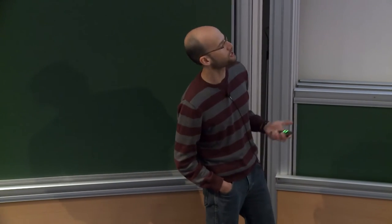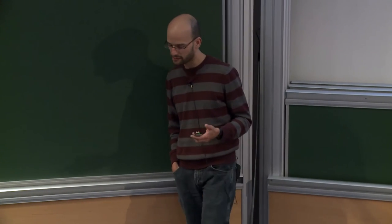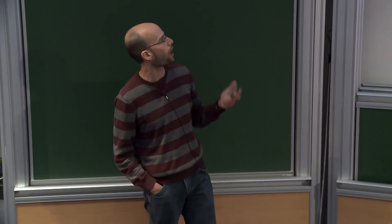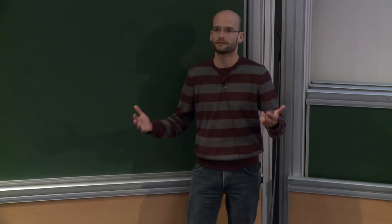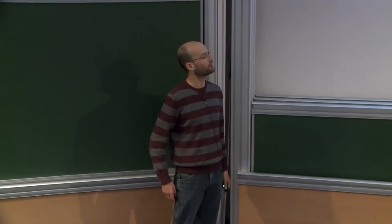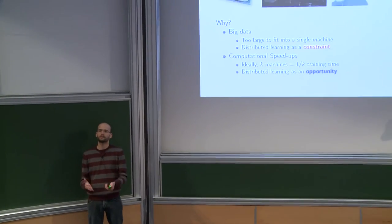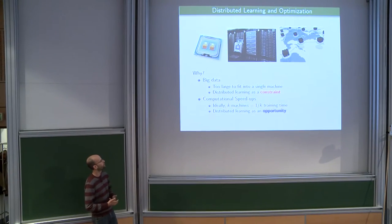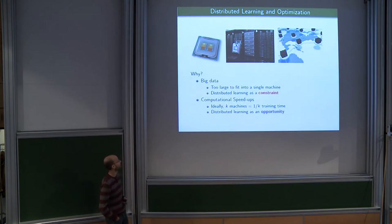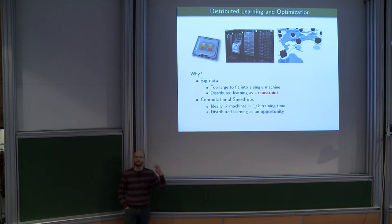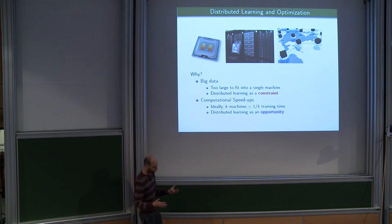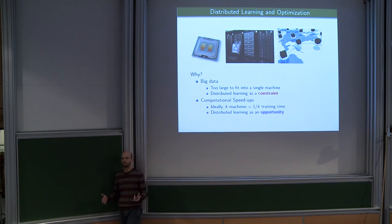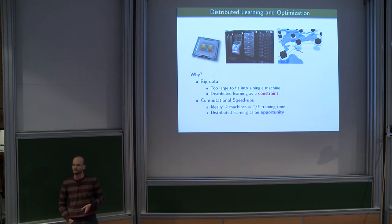Distributed learning and optimization has become very popular in recent years and there are two main reasons to consider this setting. One is when we have lots of data — we live in the era of big data and sometimes it is so large that we cannot fit it in a single machine. But another situation is when distributed computation is an opportunity: if we have k machines, hopefully we'll be able to solve the problem k times faster.